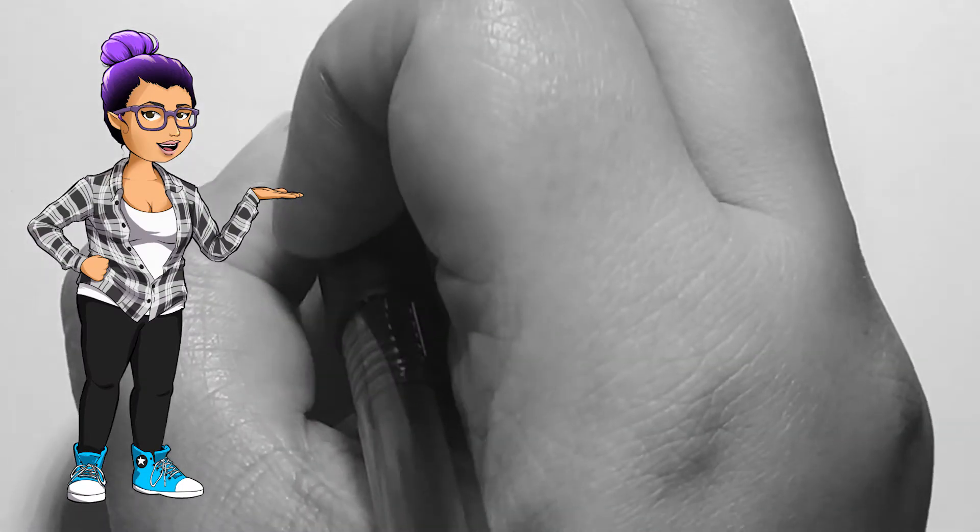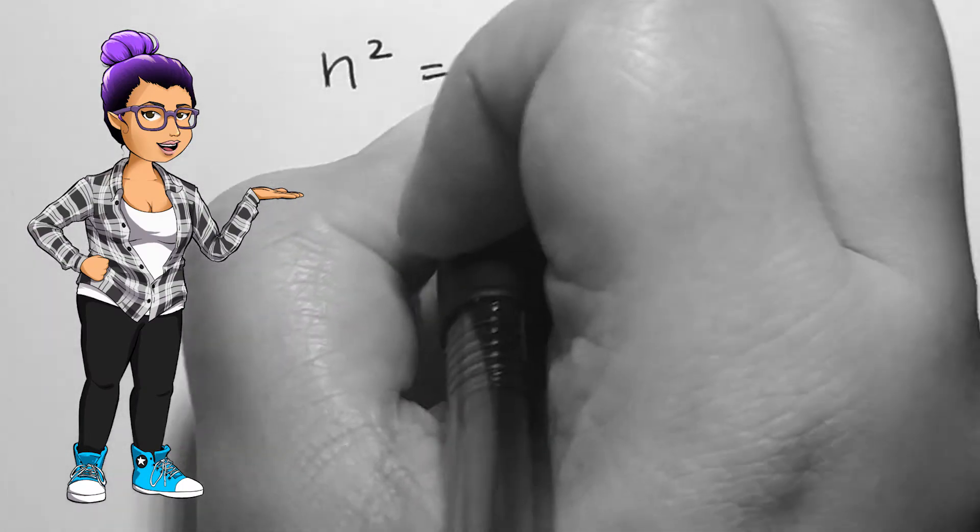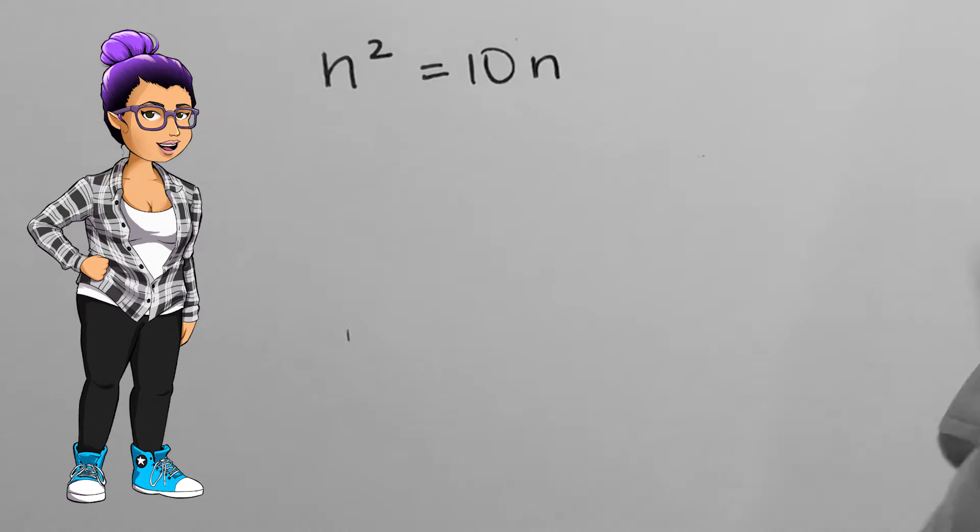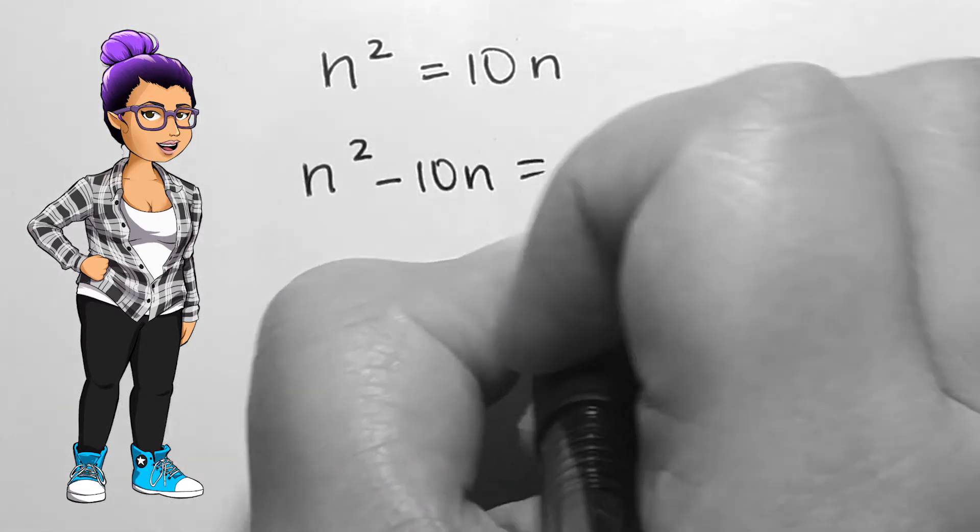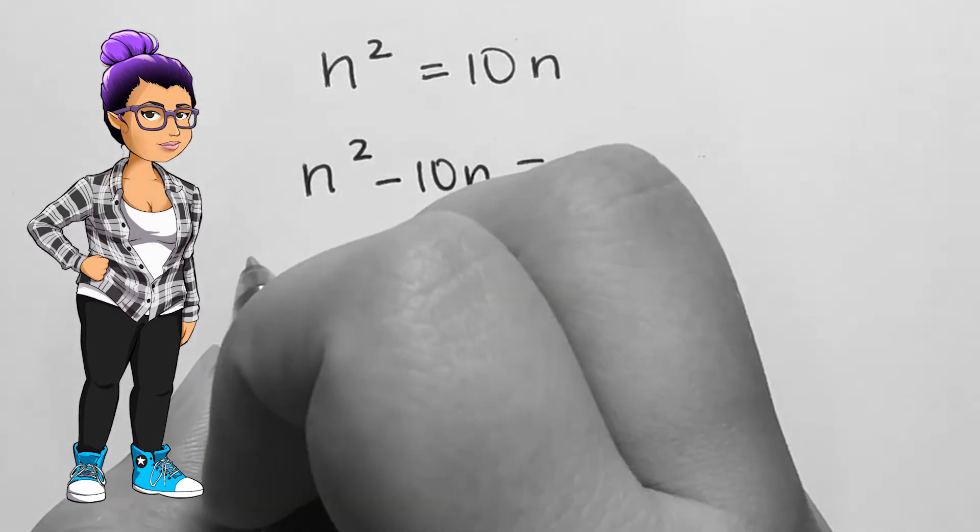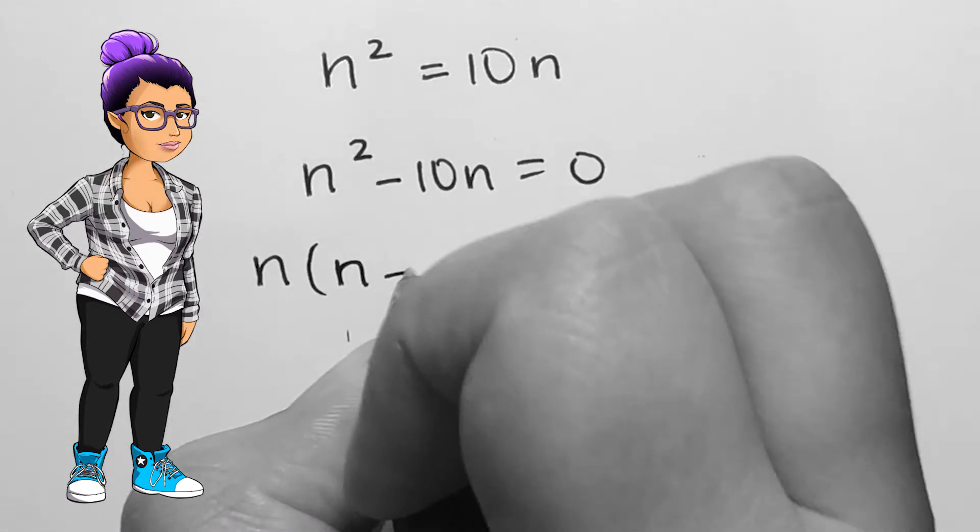Say we want to solve n squared equals 10n. I can subtract 10n on both sides to get n squared minus 10n equals zero. The zero is important in using the zero product rule.